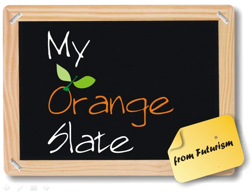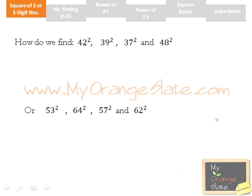Hello friends. Welcome to myorangeslate.com from Futurism. Today we will see a very simple method to find squares of two-digit numbers. Say we have to find squares of 42, 39, or 53, 64, etc.